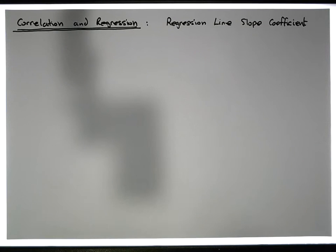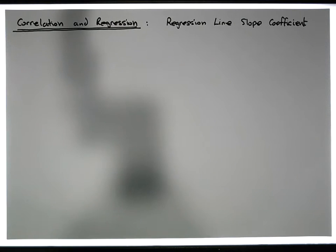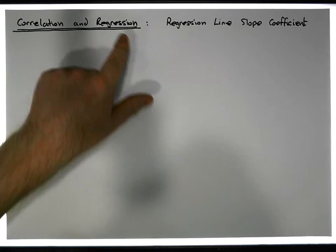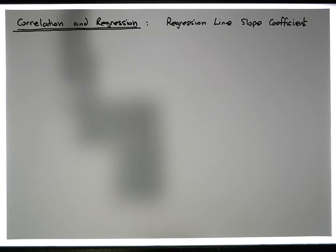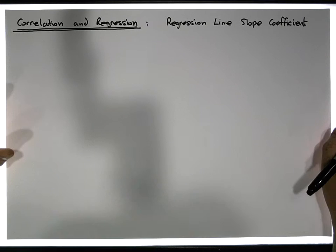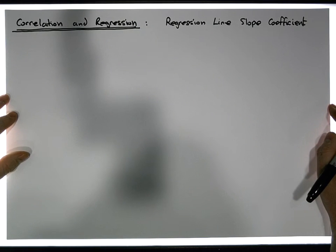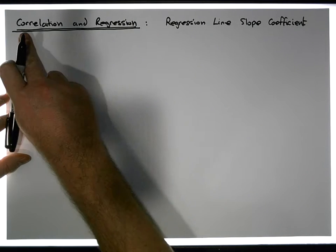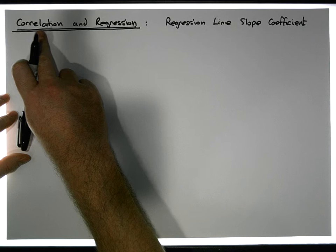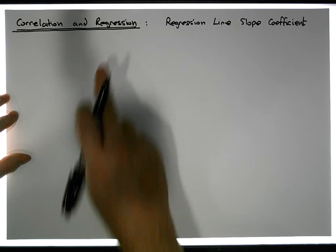Hi guys, this is Jonathan Lambert with the Mathematics Development and Support Service at the National College of Ireland. This is another short video in our series dealing with correlation and regression, and it's been a while since I did a video in this particular playlist.